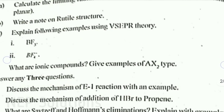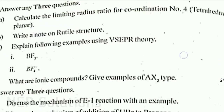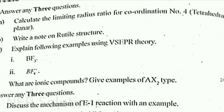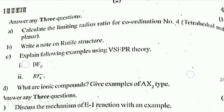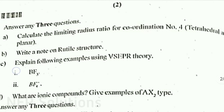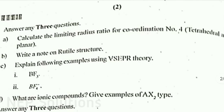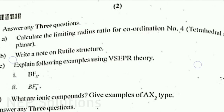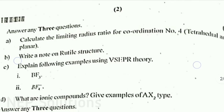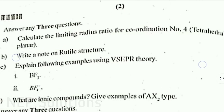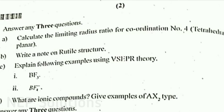Next section — 4 questions, answer any 3. A. Calculate the limiting radius ratio for coordination number 4, tetrahedral and planar. B. Write a note on RUTAL structure. C. Explain the following examples using VSEPR theory: BF3 and BF4. D. What are ionic compounds? Give examples of AX2 type.